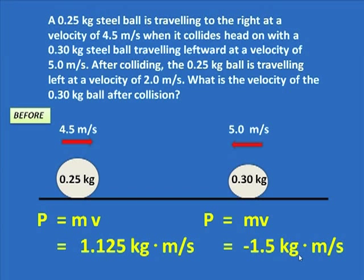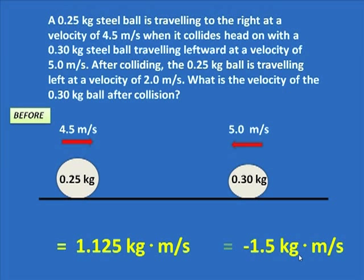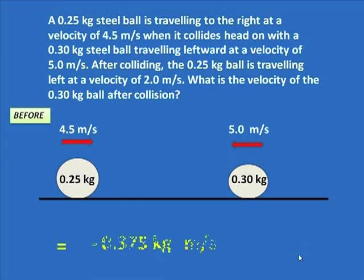Now again, this is a system. The one ball, the other ball coming together, and the two momentums together give the momentum of this system before they collide. We take those two momentums, add them, and notice we get negative 0.375. There's an overall momentum of this system before they collide to the left.